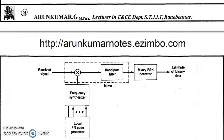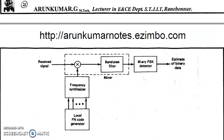Here this is the receiver of your FH MFSK. The received signal is fed to your mixer and the same PN code is used and it is fed to frequency synthesizer and we have a band pass filter then we have M-ary FSK detector then demodulation is happening. After demodulation we are getting the binary data. In case of your direct spread spectrum technique you were using BPSK modulation. In case of frequency hopping, FSK modulation is used but we are using M-ary FSK modulation.